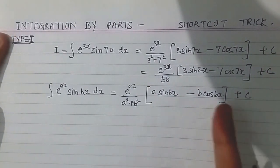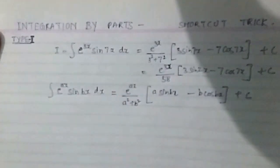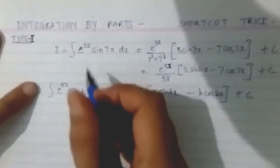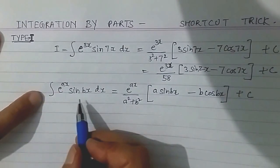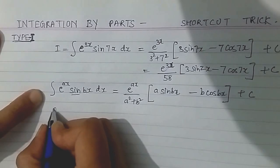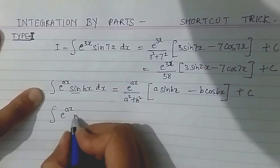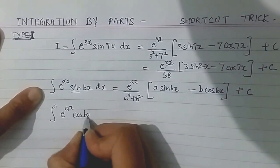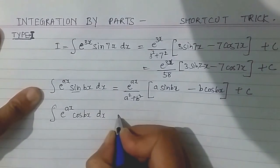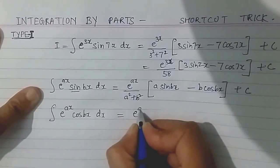That's all. Now this formula is equally valid for cosine also. For cosine, if we have integrals of the type e power ax cos bx dx, then my shortcut formula will be e raised to the power ax divided by a squared plus b squared.